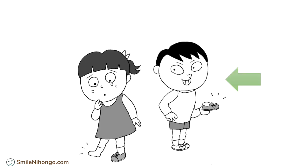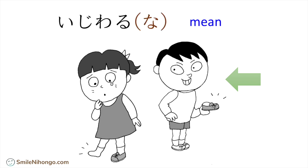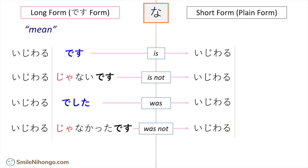Here is a new na-adjective in this lesson meaning 'mean' or 'cruel': 意地悪な. When you conjugate 意地悪な in plain form it goes like this: 意地悪だ、意地悪じゃない、意地悪だった、意地悪じゃなかった.